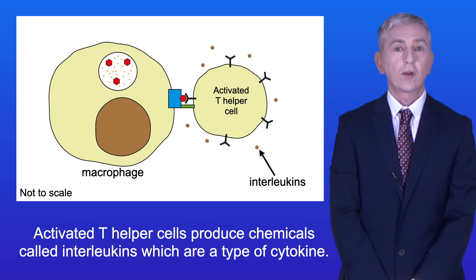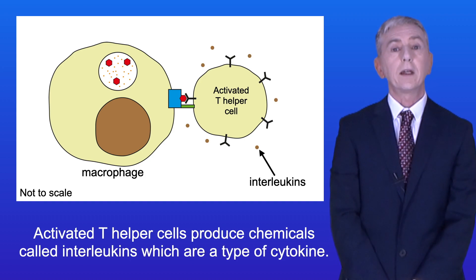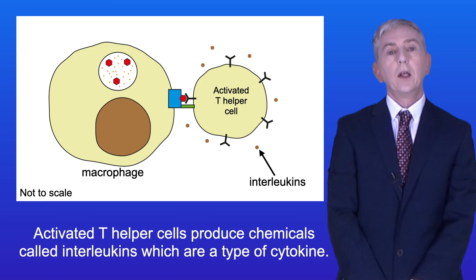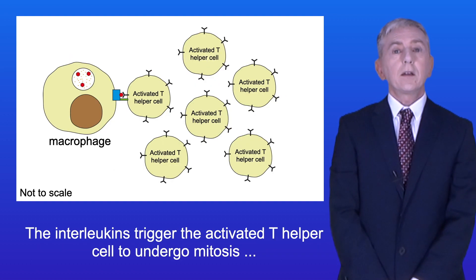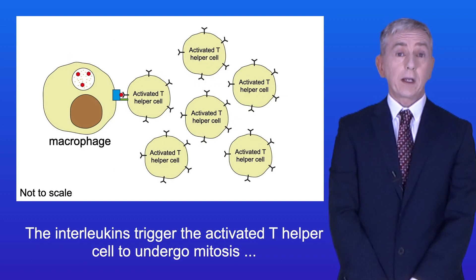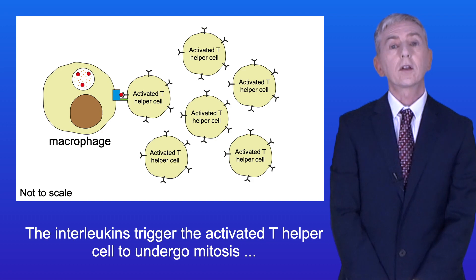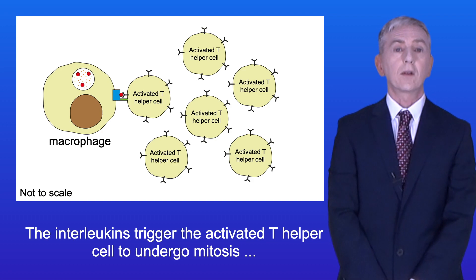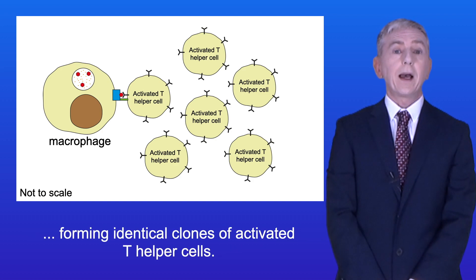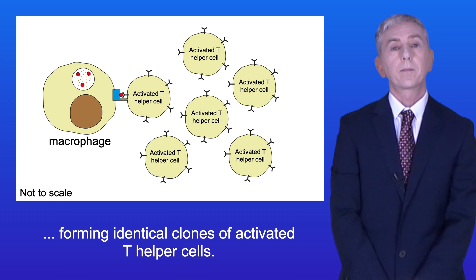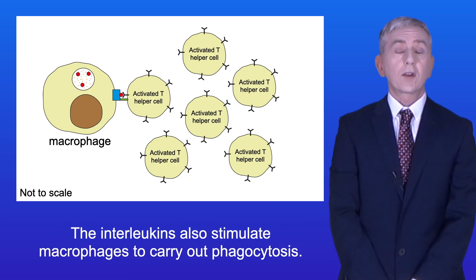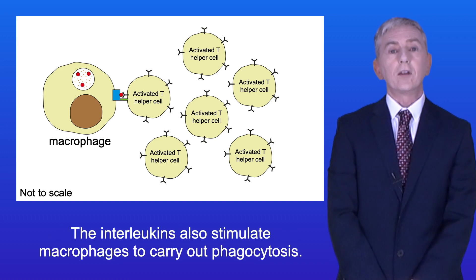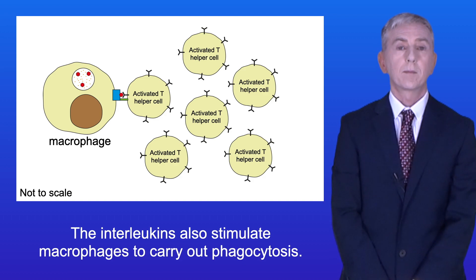Activated T helper cells produce chemicals called interleukins, which are a type of cytokine. The interleukins trigger the activated T helper cell to undergo mitosis, forming identical clones of activated T helper cells. The interleukins also stimulate macrophages to carry out phagocytosis.